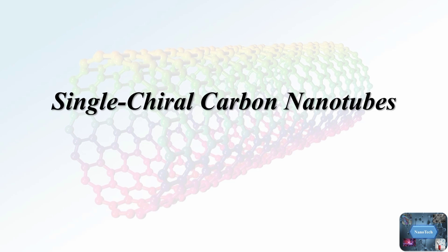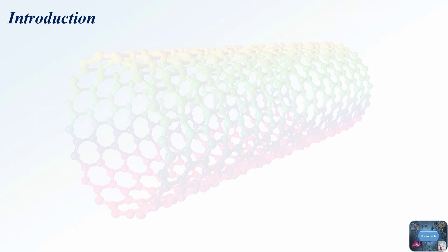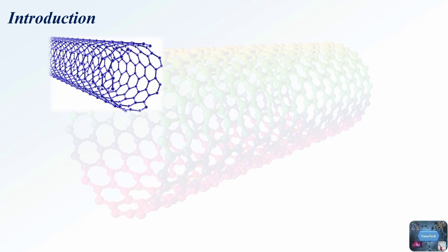Starting with an introduction: the distinct and highly diverse electronic and optical properties of single wall carbon nanotubes have generated considerable interest for various applications. However, the methods of synthesis generally result in heterogeneous mixtures concerning chirality, diameter, and band gap. This presents a crucial issue for certain applications that necessitate nanomaterials with more uniform properties.